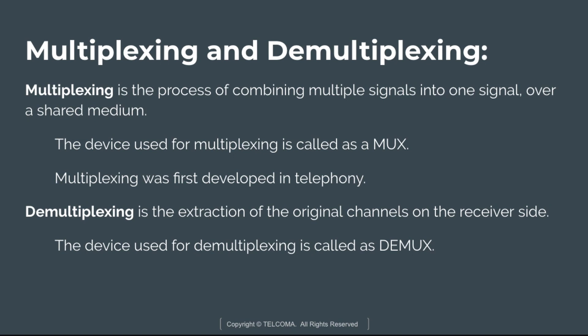Multiplexing is a process of combining multiple signals into one signal over a shared media. The device used for multiplexing is also known as mux. Multiplexing was first developed in telephony, where a number of signals were combined to send through a single cable. Demultiplexing is the extraction of the original channels on the receiver side — the separation of the combined signal at the demultiplexer.